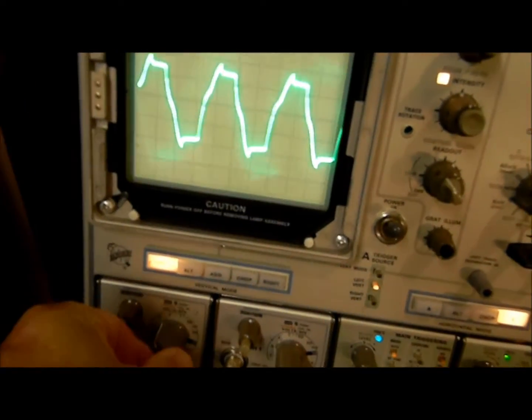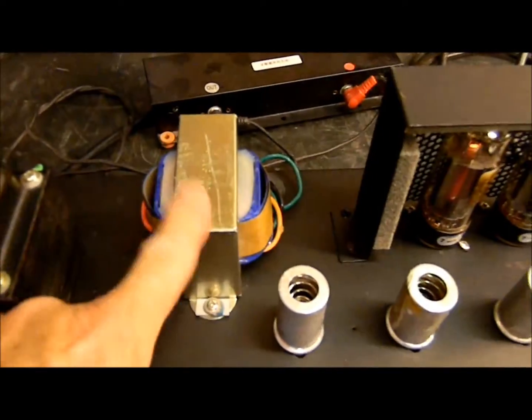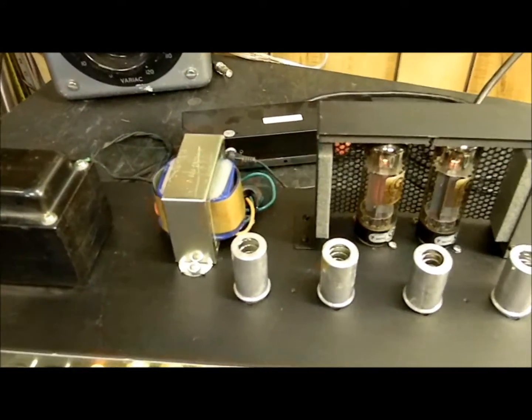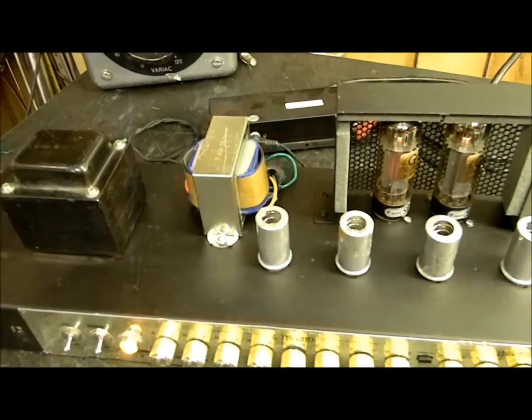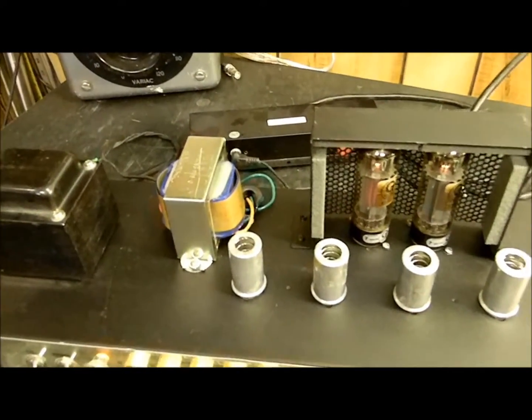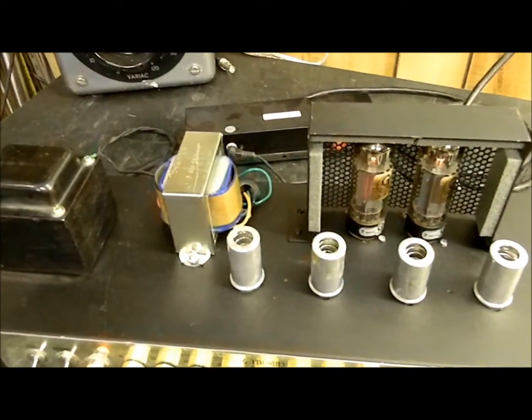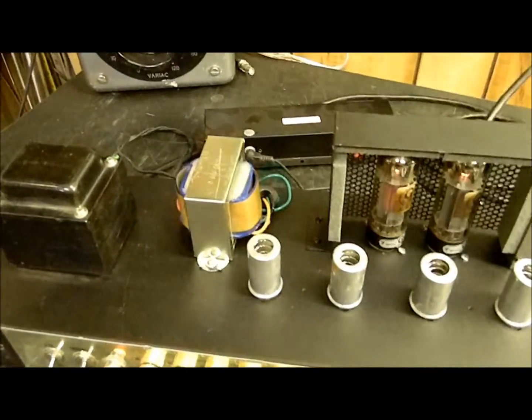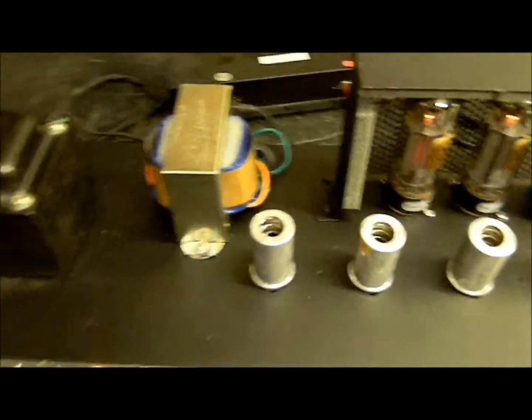The problem is the output transformer. I've measured it with an ohmmeter—it's kind of hard to tell. I can't tell directly that it's bad by measuring with an ohmmeter. I don't see anything shorted to the case, and the resistance reading from the center tap to each plate lead—they're different but they're not terribly different.